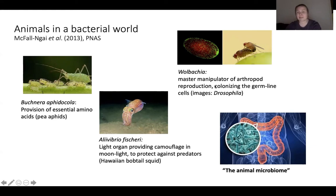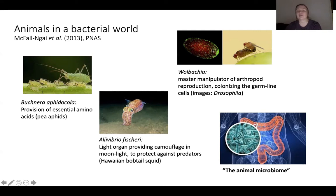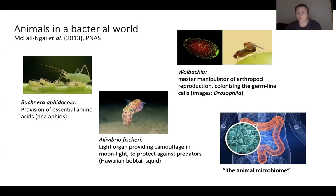A third example is Wolbachia. This bacterium has been estimated to infect almost a third of all arthropod species, and it colonizes the germline cells of its host. In this image you're looking at a Drosophila egg, and all the little green dots are Wolbachia cells. Wolbachia has become particularly famous because it very often manipulates the reproduction of its host, with phenotypes such as feminization or male killing.